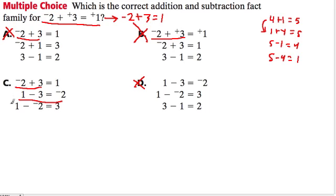So I know that C has to be correct. And there we see the last statement as well, which makes sense. 1 minus negative 2 is 3. So this is the fact family. Choice C.